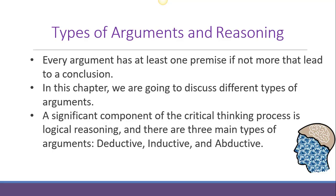To recap what we already know about arguments: every argument has at least one premise, sometimes more, that leads to a specific conclusion. In this chapter we're going to talk about two different types of argument, which relates back to the key principle of critical thinking — logical reasoning. We'll focus on deductive and inductive arguments, but there's also a third main type that doesn't get discussed as much, and that's abductive reasoning.